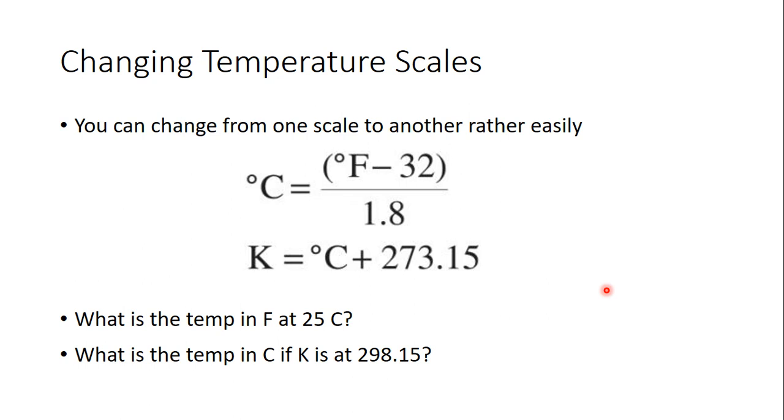All right. So, for what is the temperature in F at 25C? What you want to do is plug in the 25 here in this C and you get equal to F minus 32 divided by 1.8. You take this 1.8 and you multiply it on each side. That will cancel out this 1.8 and 25 times 1.8 equals 45. Now, you have 45 equals F minus 32. So, you just add 32 to each side and when you're at 25C, you're at 77 degrees Fahrenheit.